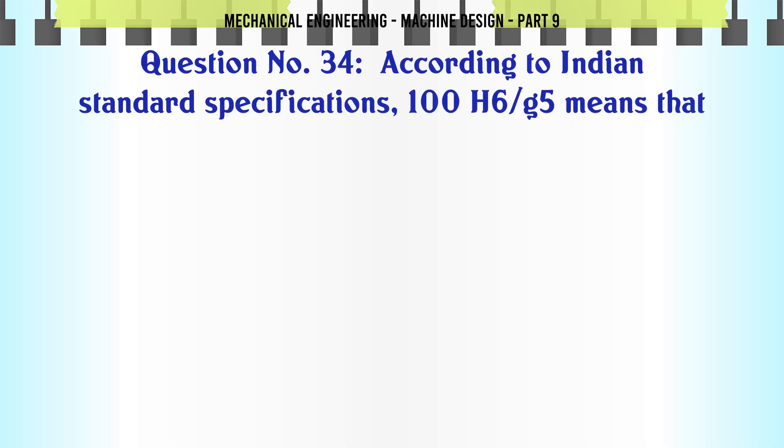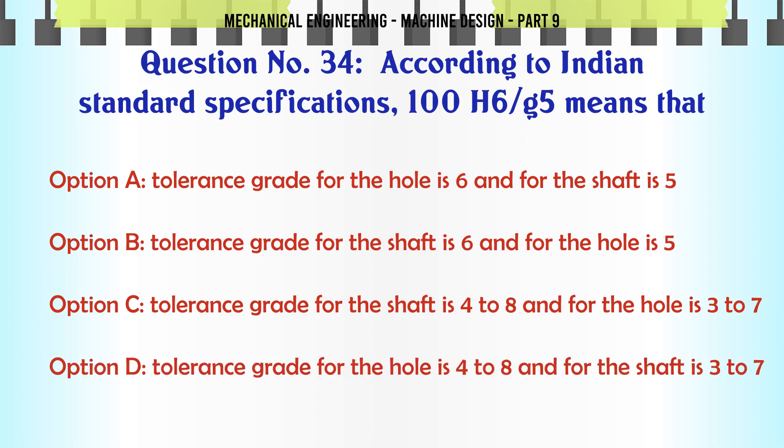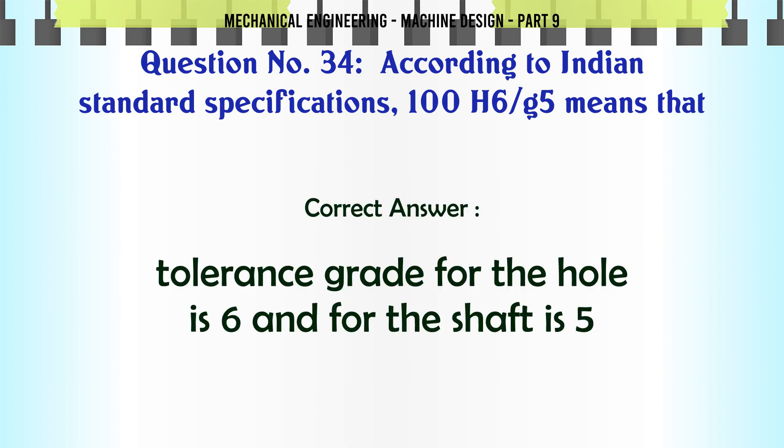According to Indian standard specifications, 100H6/g5 means that: A. Tolerance grade for the hole is 6 and for the shaft is 5, B. Tolerance grade for the shaft is 6 and for the hole is 5, C. Tolerance grade for the shaft is 4 to 8 and for the hole is 3 to 7, D. Tolerance grade for the hole is 4 to 8 and for the shaft is 3 to 7.